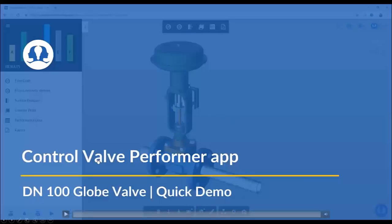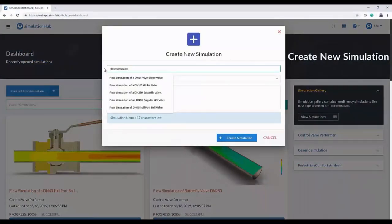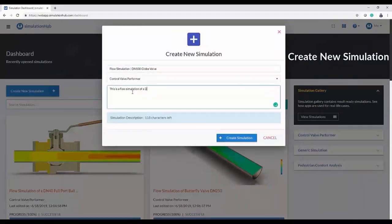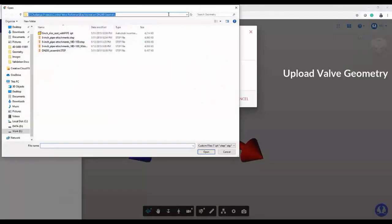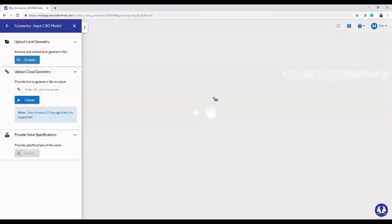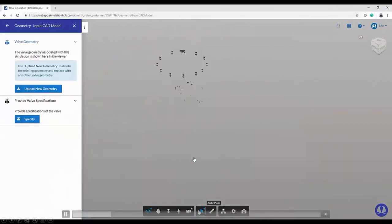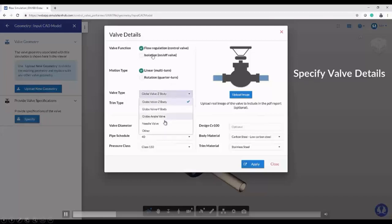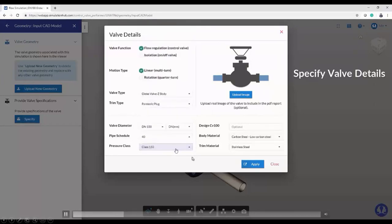Let me quickly show you a demo of this application. Here we are creating a simulation project. We will be demoing on a DN100 globe valve. There are many different simulations available in our Simulation Hub gallery. What we did right now is we uploaded the CAD model to Simulation Hub. Now we will be specifying some inputs like is it a flow regulation type of valve or isolation valve, is it a linear valve or rotation valve, then some other inputs like the size diameter, pipe schedule, pressure class, material and all. Very few inputs we need to set up.